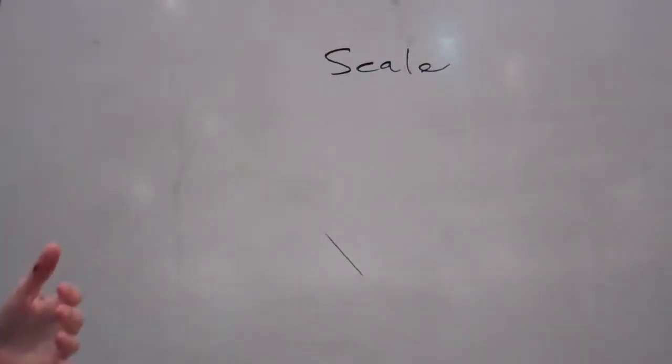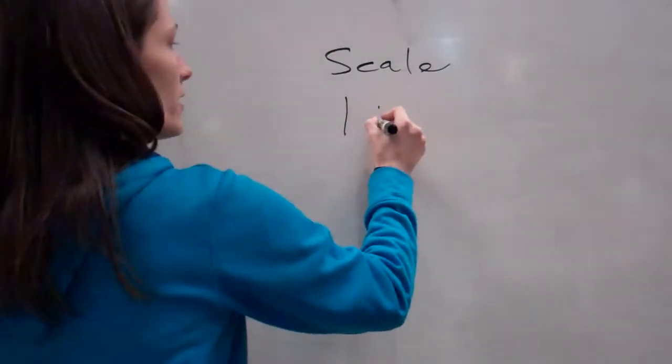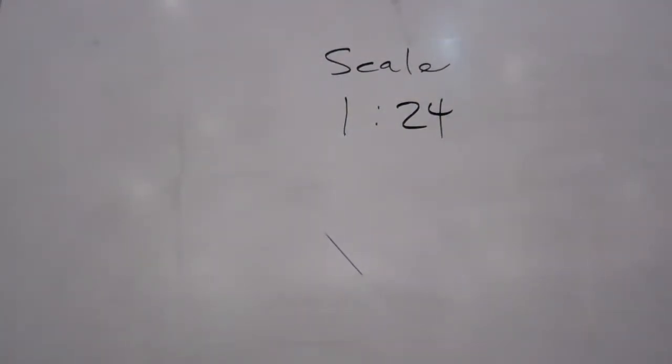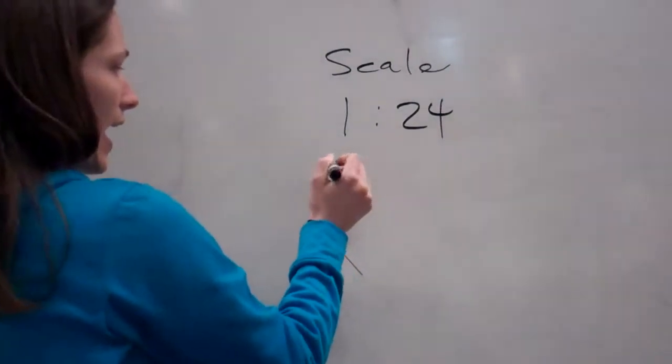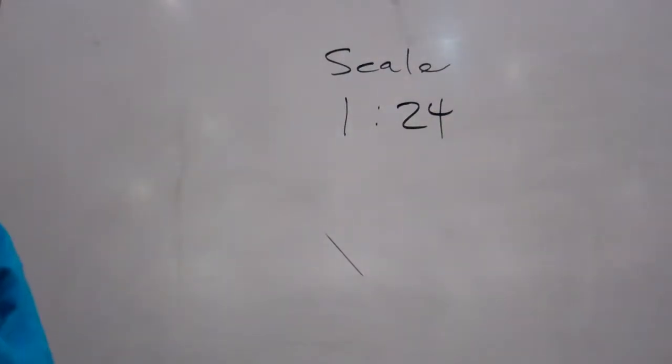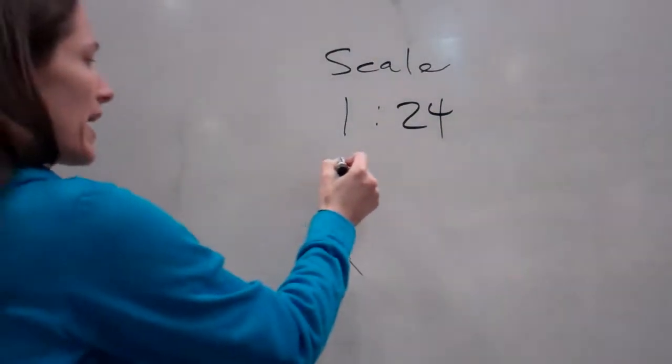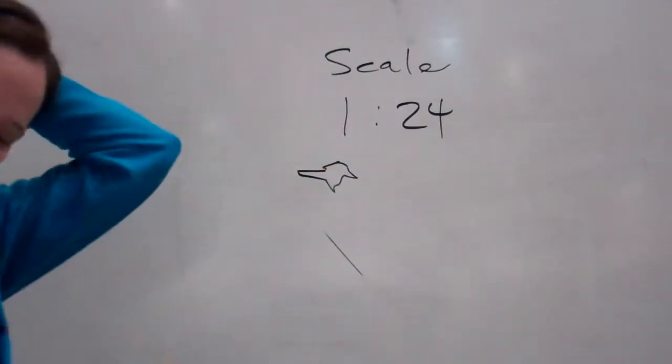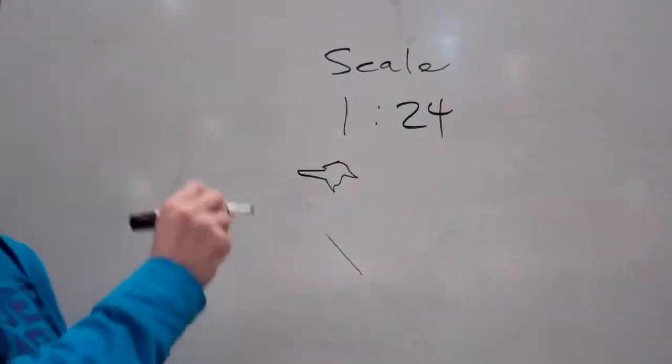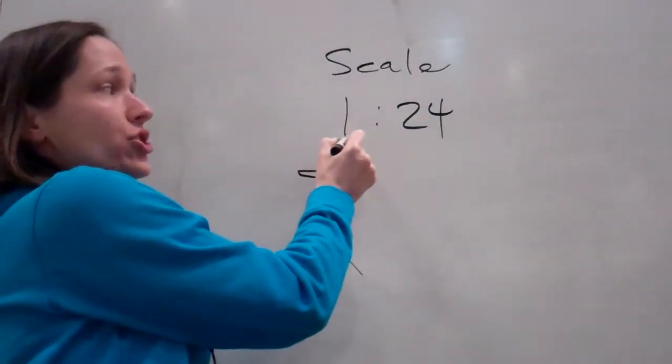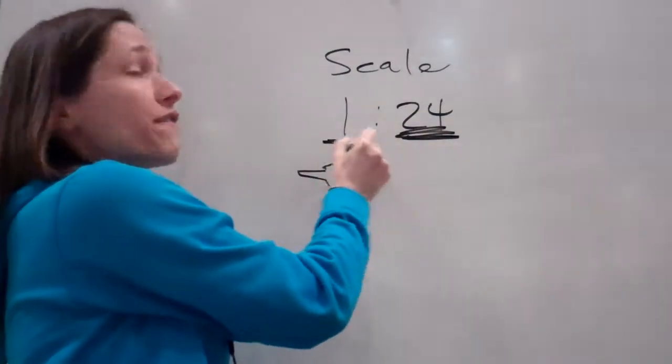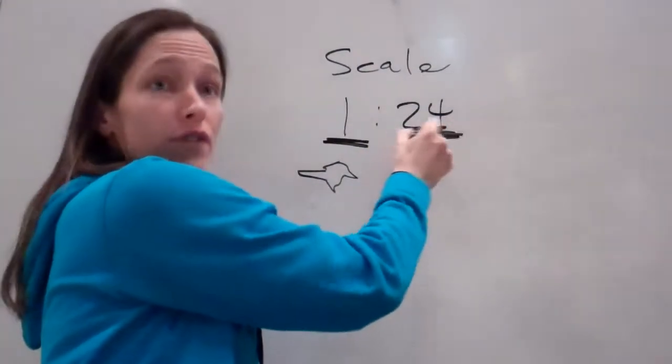What I'm going to say is the scale is 1 to 24. What that means is, if my little bitty airplane right here, every 1 inch is 24 inches here. Every 1 foot is 24 foot here.